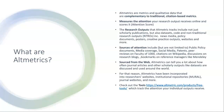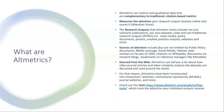For that reason, altmetrics have been incorporated into researchers' websites and institutional repositories. For example, the Maynooth Repository Mural has a link where you can look at the altmetrics you receive for your work, as well as journal websites and more. They also have on their website lots of useful tools, including ones that allow you to track your own output and the attention that your output receives.